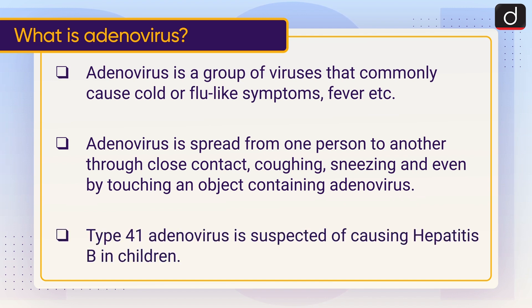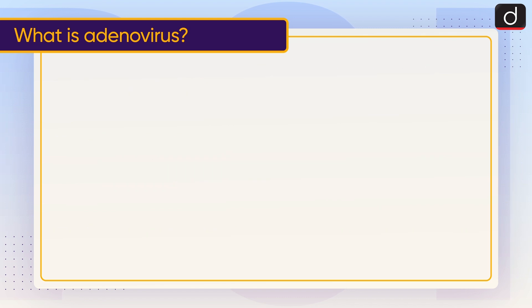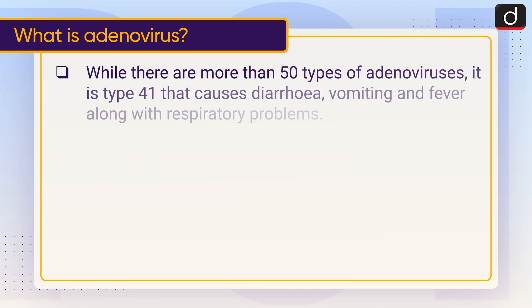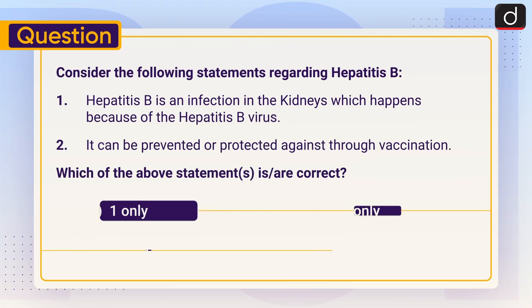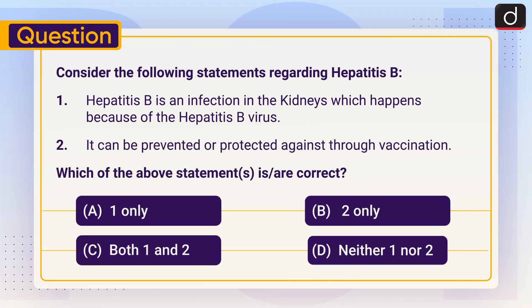Adenovirus is suspected of causing hepatitis in children. While there are more than 50 types of adenoviruses, it is type 41 that causes diarrhea, vomiting, and fever along with respiratory problems.